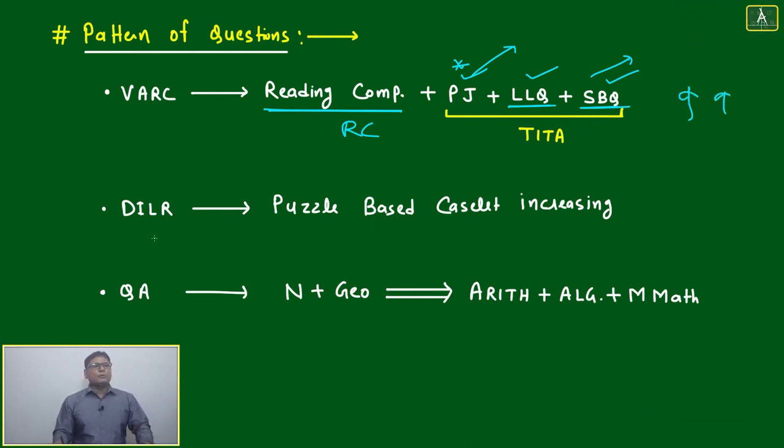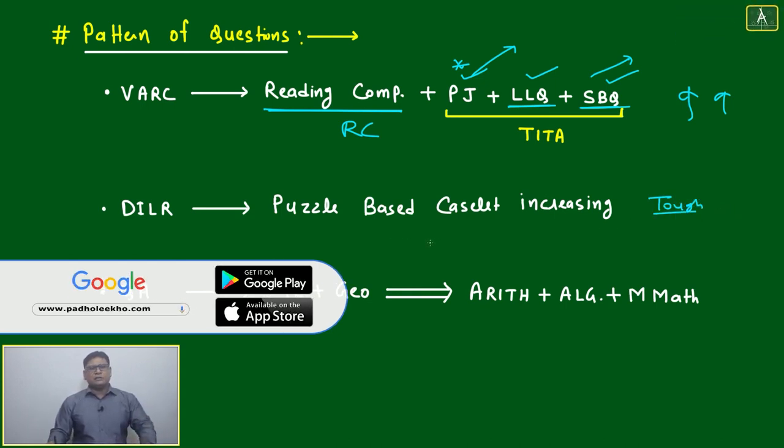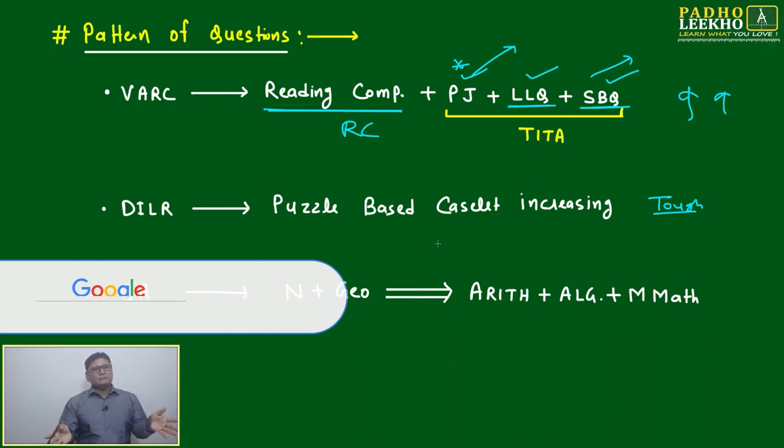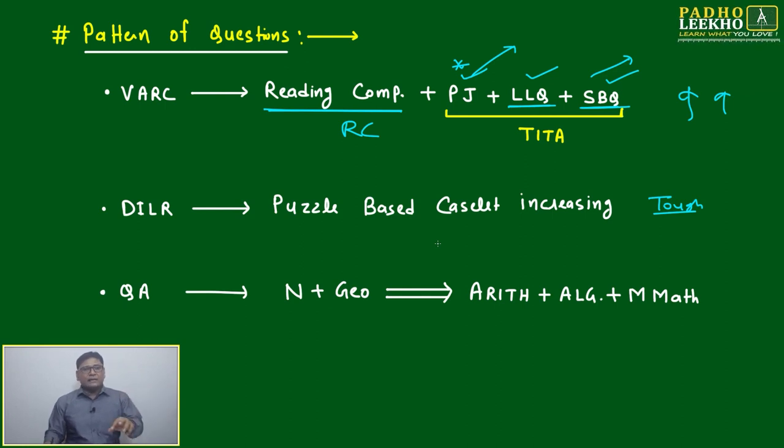This year you can expect DILR to be a little bit more challenging. Changes are happening in the last three years—2018, 2019, and 2020. DILR was tough on average every year. Not all questions are tough; if 30-40% of questions are tough, the paper is declared tough in the market. The remaining 30% are always easy; you just have to pick them at the right time in round one.